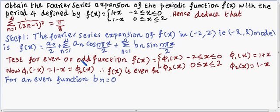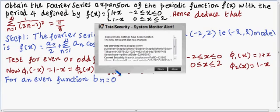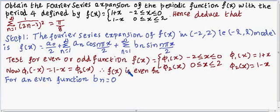Now test whether f(x) is even or odd. Let f₁(x) = 1 + x on (−2, 0) and f₂(x) = 1 − x on (0, 2). Computing f₁(−x) = 1 − x = f₂(x), so f₁(−x) = f₂(x), meaning f(x) is an even function. For an even function, bₙ = 0.